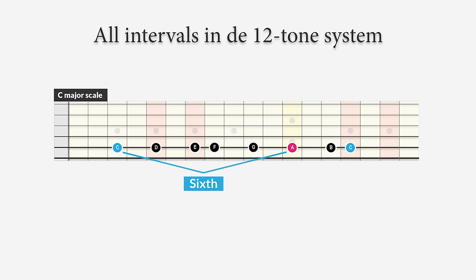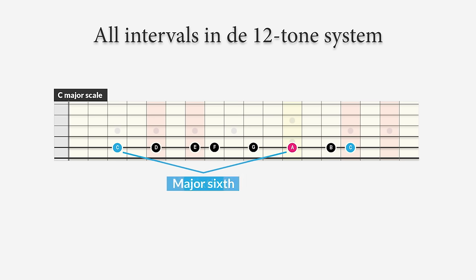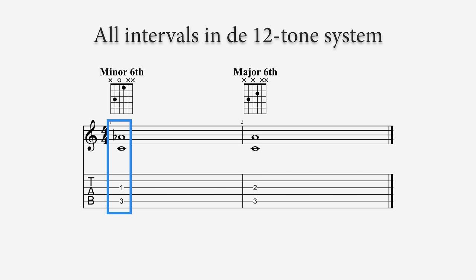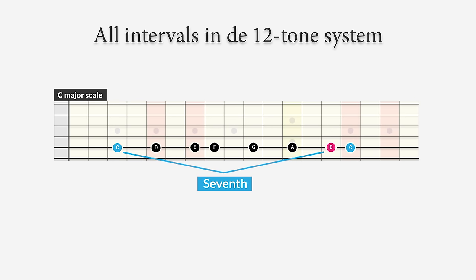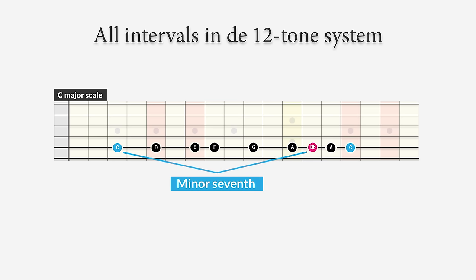The sixth is the interval between C and A — the first and sixth note from the major scale — with a distance of nine half steps. But there's also a sixth between C and A-flat, which has only eight half steps. This sounds minor and we call it a minor sixth. The original sixth between C and A sounds major and we call it a major sixth. The seventh is the interval between C and B, with 11 half steps — it sounds major and we call this a major seventh. But there's also a seventh between C and B-flat with only 10 half steps, which we call a minor seventh.